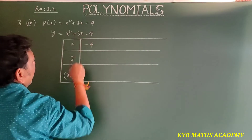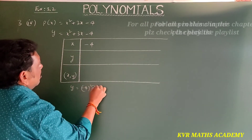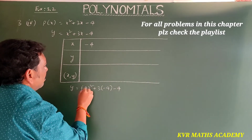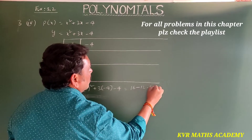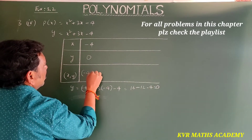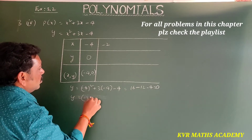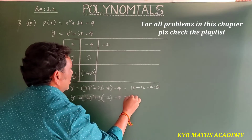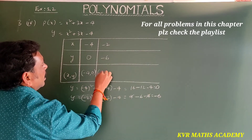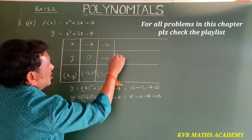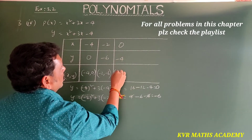For x = -4: y = (-4)² + 3(-4) - 4 = 16 - 12 - 4 = 0. So ordered pair is (-4, 0). For x = -2: y = 4 - 6 - 4 = -6. So (-2, -6). For x = 0: y = 0 + 0 - 4 = -4. So (0, -4).